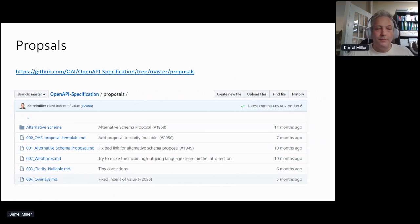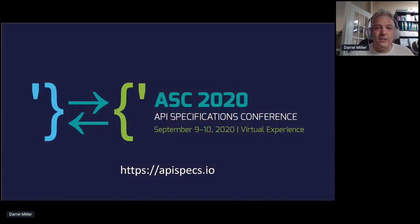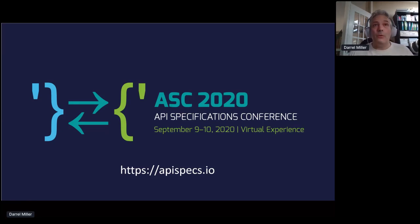Our plan is hopefully to very quickly, once we get the overlays work done, start working on OpenAPI 3.2. Also, a shout out to the API Specifications Conference happening in September. Our call for papers is out at APIspecs.io. This event is really intended to provide a forum for people who are either using specifications and have feedback, or writing API specifications, to be able to network and share their ideas and learn from each other. Please, if you have some ideas you want to share, submit for the call for papers.